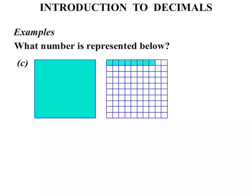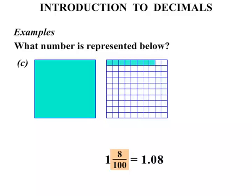The next one — what have we got? We've only got one whole, and we have eight hundredths. The way we're going to write that: we put our one down, and the eight hundredths we're going to write as 0.08. Again, we've got over 100, so we expect two decimal places. Well, that concludes the lesson — good luck with your questions.